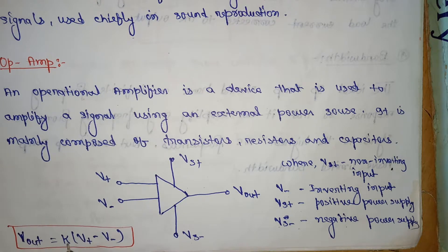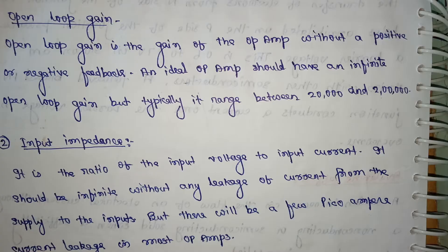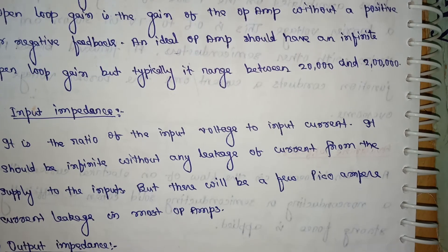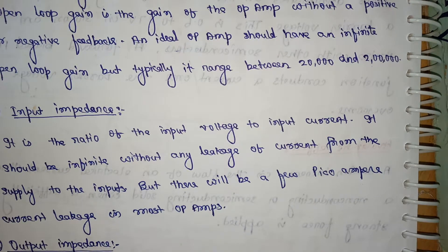V output is equal to k(V plus minus V minus). Next, what is open loop gain? Open loop gain is the gain of op-amp without a positive or negative feedback. An ideal op-amp should have an infinite open loop gain, but typically it ranges between 20,000 and 200,000.